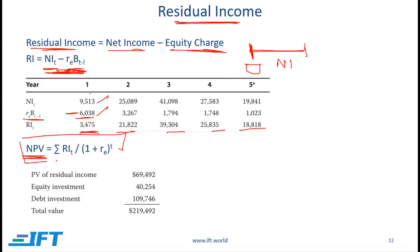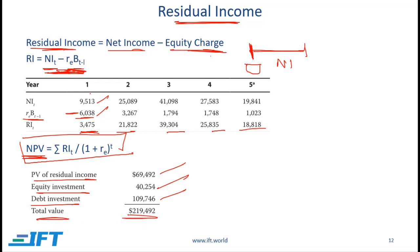That is what is being done here. If we have the NPV which is the present value of the residual income across all the years, the total value of a project equals the present value of the residual income plus the initial equity investment plus the debt investment. Adding all these numbers gives us the total value of a project.